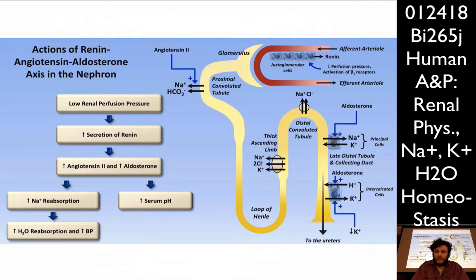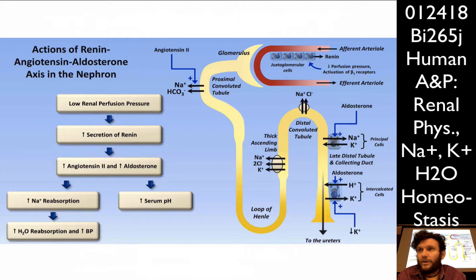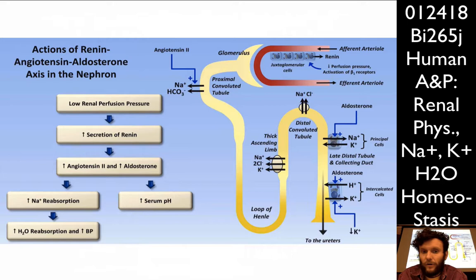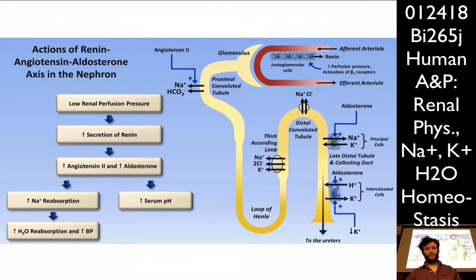Let's look at how this plays out piece by piece in the actual nephron. Starting at the glomerulus, a drop in renal blood pressure leads the juxtaglomerular cells to produce renin, which then leads to more filtrate via increased blood pressure. In the proximal convoluted tubules, angiotensin II will stimulate an increase in the resorption of sodium and carbonate, leading to an increase in osmotic pressure drawing water back into the body and shoring up the blood pressure.